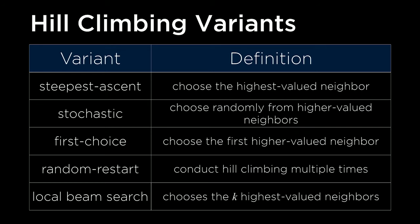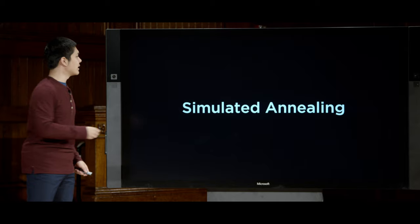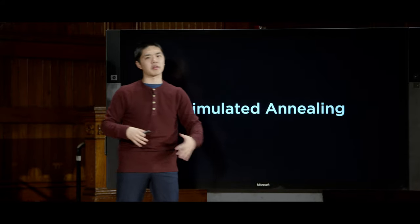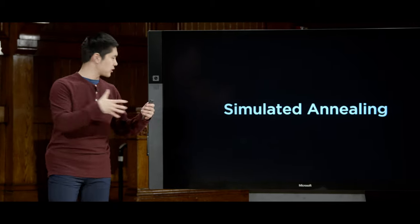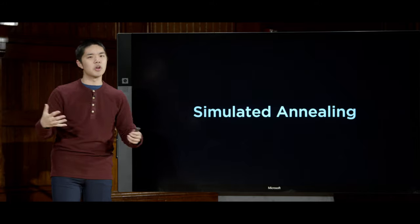The real problem with all hill climbing variants is that they never make a move that worsens the situation. They always require improvement to move. But to find a global maximum or minimum, we sometimes need to dislodge ourselves from a local extremum. The most popular technique for this is simulated annealing — simulated because it models the physical process of annealing, where a heated system with lots of random energy gradually cools and settles into a final position.